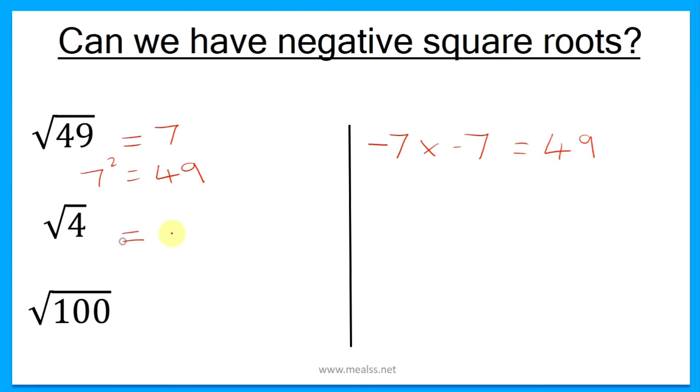So therefore we could also have negative 2 multiplied by negative 2, which gives us an answer of 4. Generally speaking, unless the question specifies that you have to find the negative square root, then you always assume that you are asked to find the positive one.